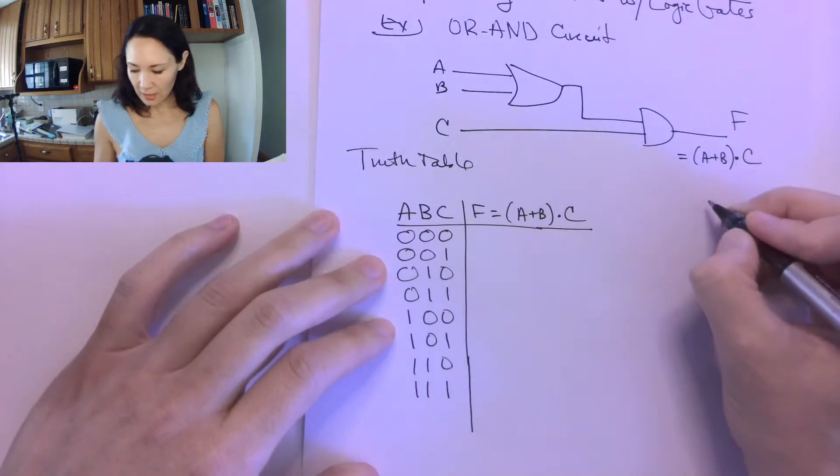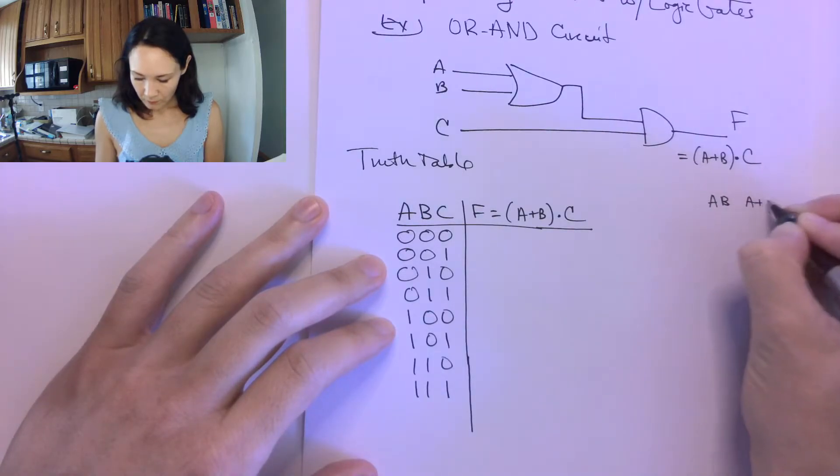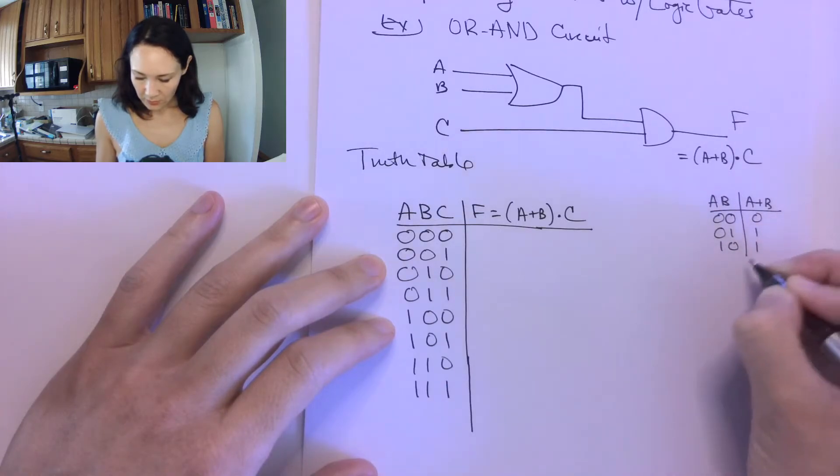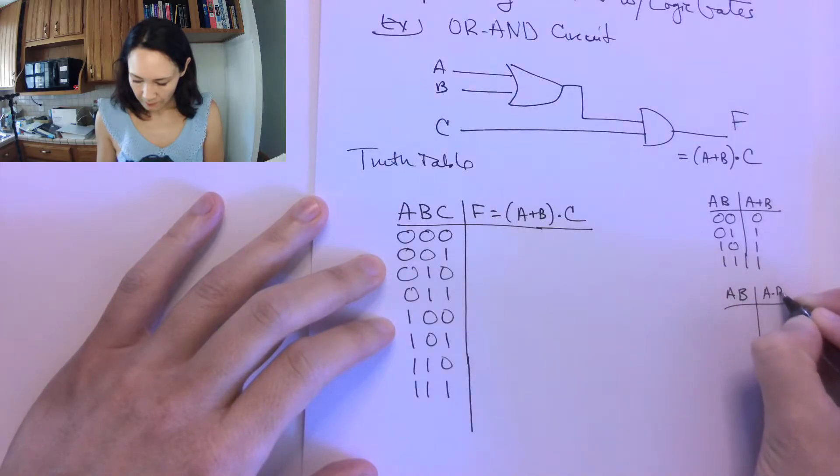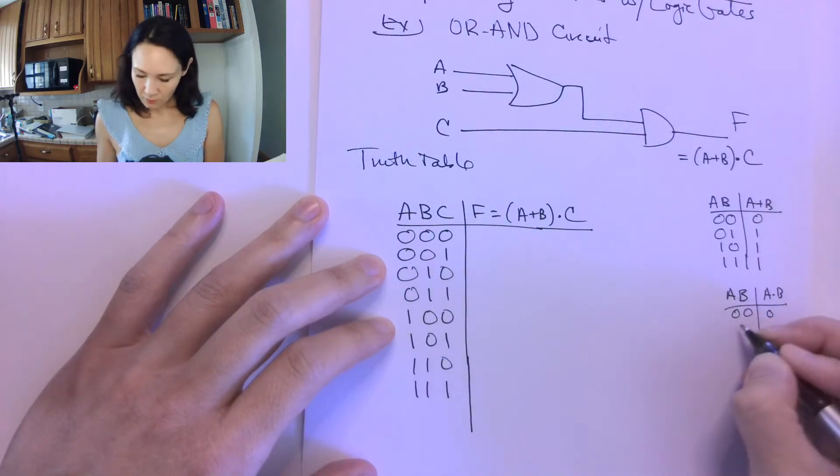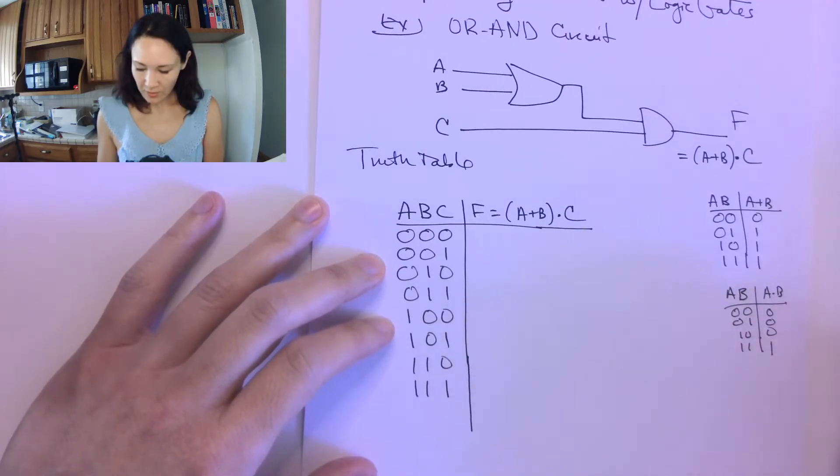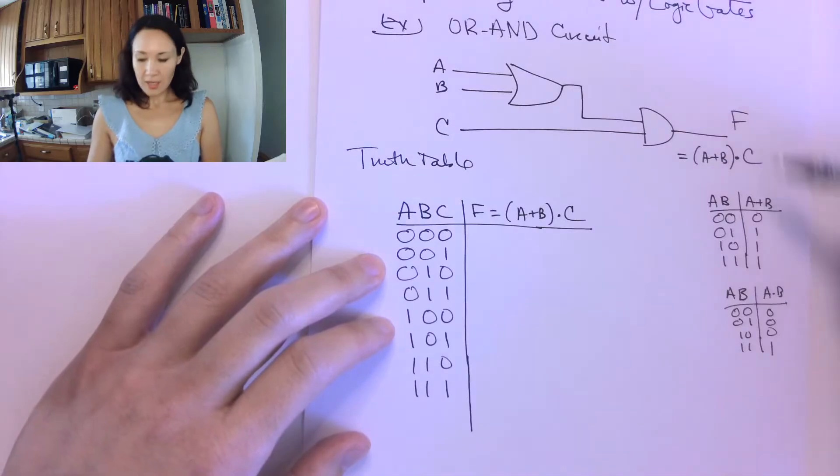If you like, in your notes, you can put on the side the truth table for the OR gate. So A or B, the truth table is 0 or 0 is 0, 0 or 1 is 1, 1 or 0 is 1, 1 or 1 is 1. If you need these in your notes so that you can use these as we're evaluating this compound circuit, that's totally fine.